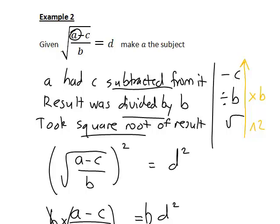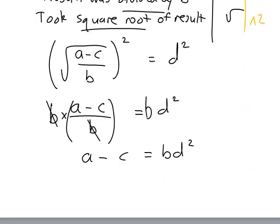Now the final operation we need to reverse is the first one that happened, subtracting c from a, and the reverse of subtraction will be addition, getting rid of c but leaving us with the required letter a that we wanted on the left hand side.